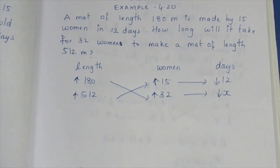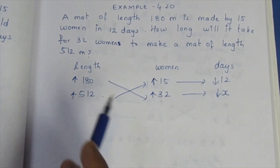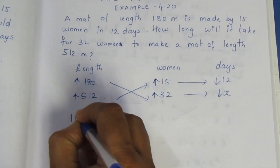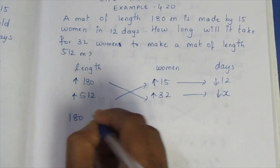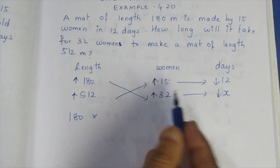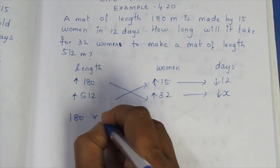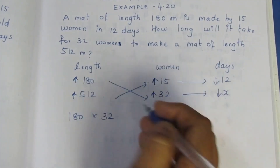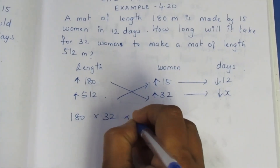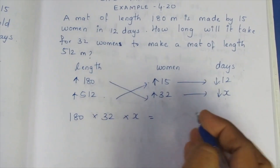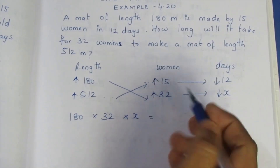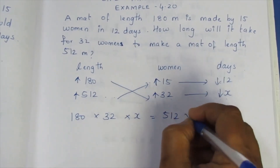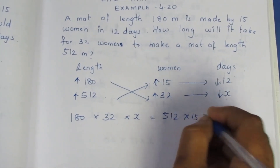We multiply as 180. The arrow marks are at the top. So: 32 will be x, which is equal to 512 × 15.